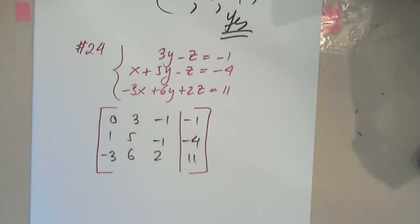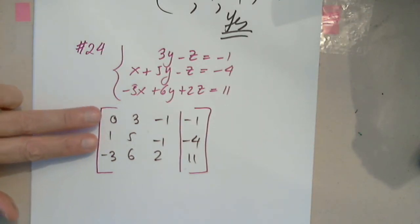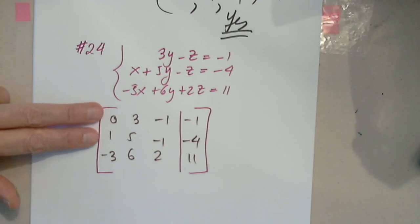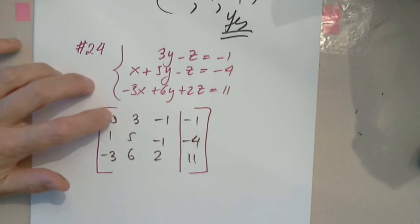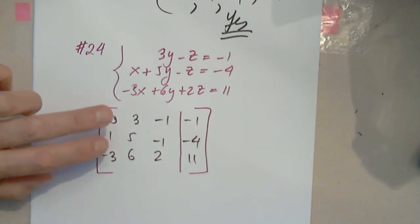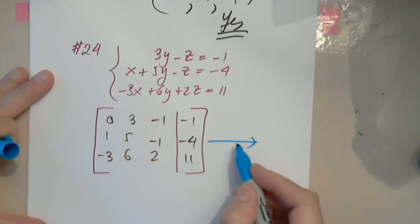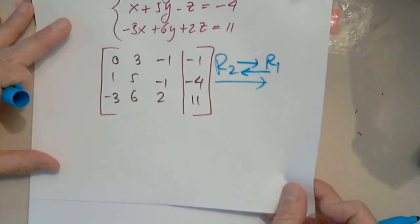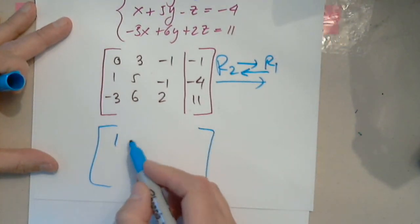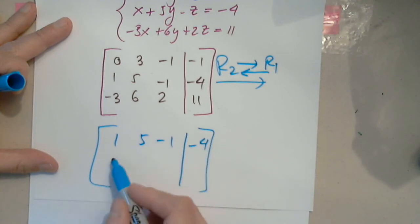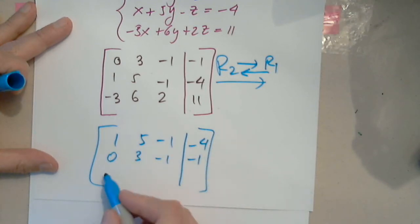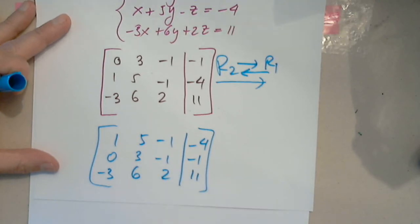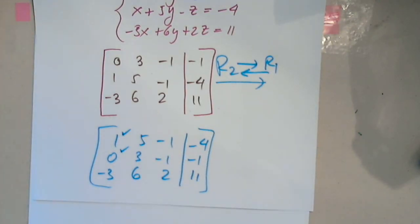We agree with this? Now I think Vinny will be happy because we have to do a swap — we have no choice. I need a 1 in the first row, first column, so I am going to swap: row 2 becomes row 1, and row 1 becomes row 2. So I copy 1, 5, negative 1, negative 4; then 0, 3, negative 1, negative 1; then negative 3, 6, 2, 11. Look — I have accomplished two different entries already.